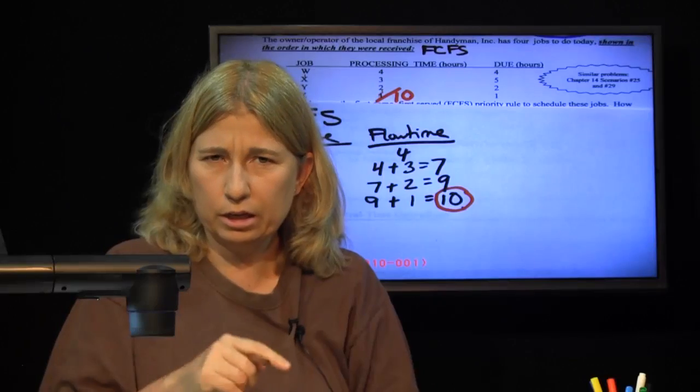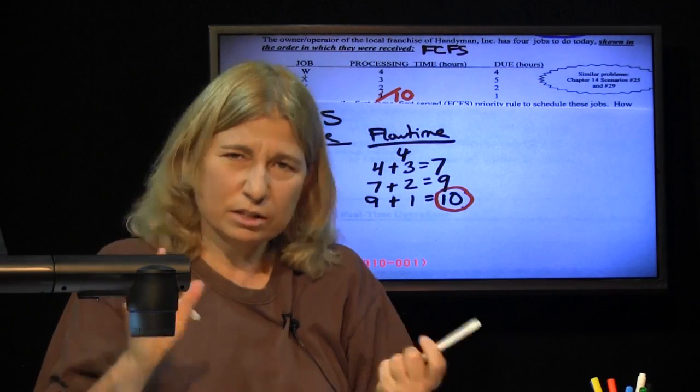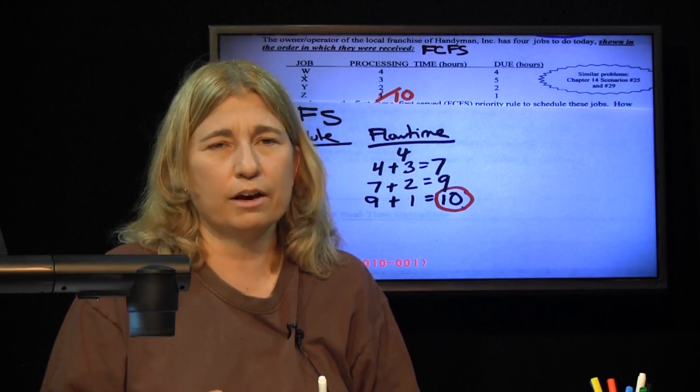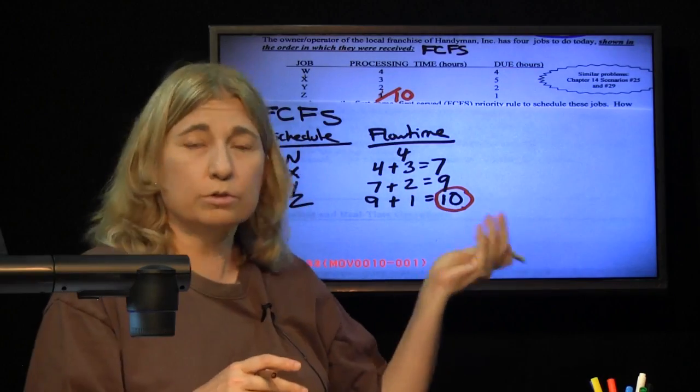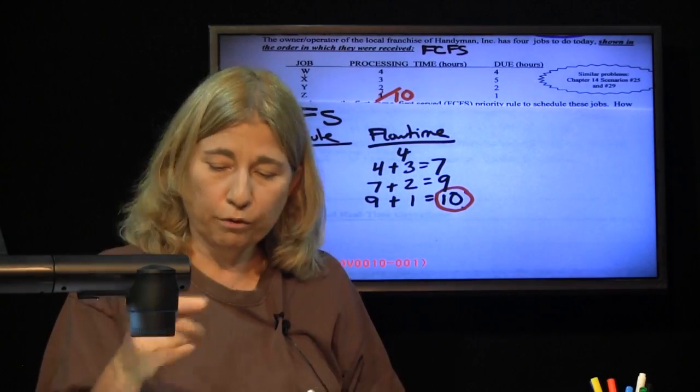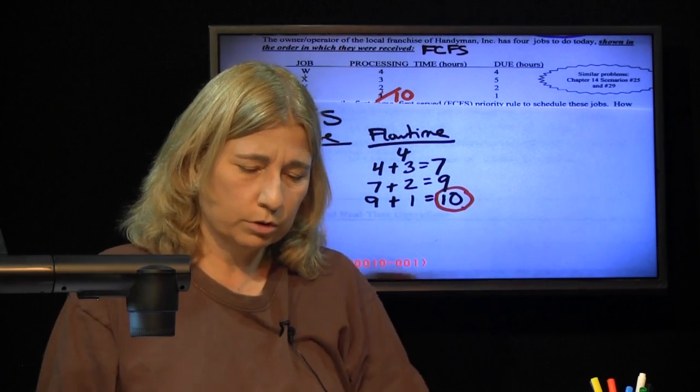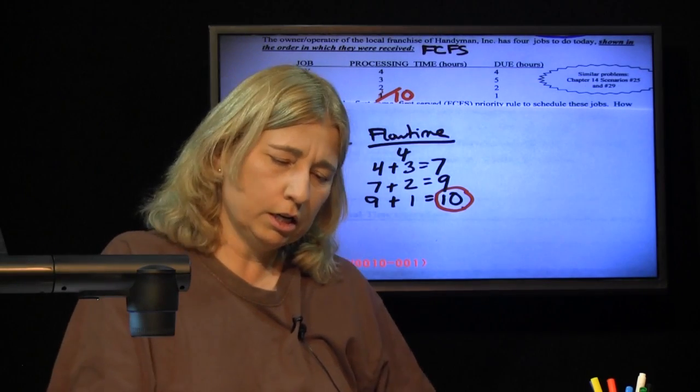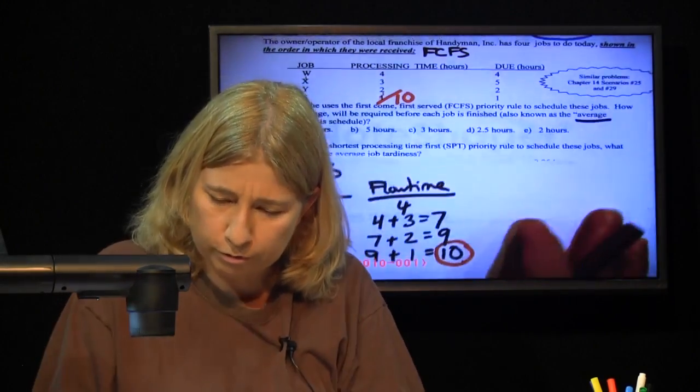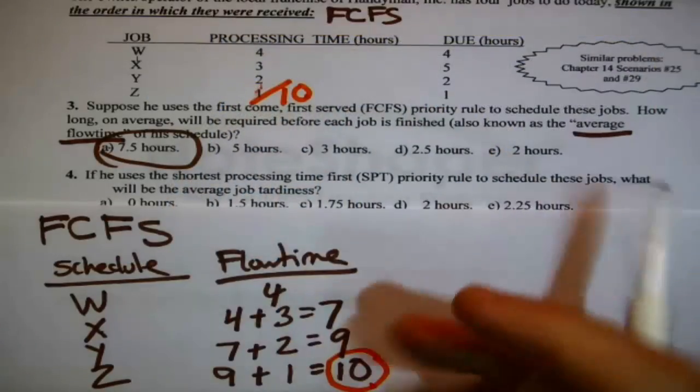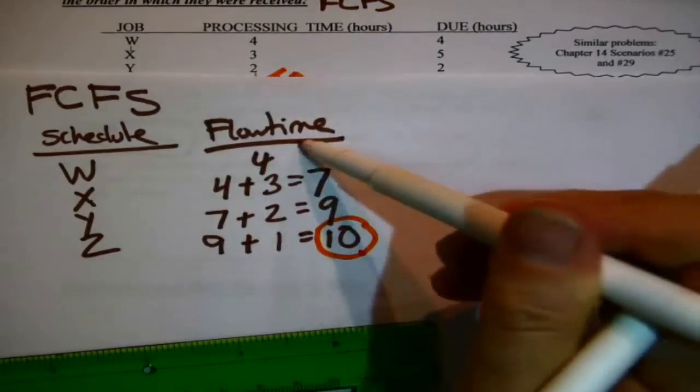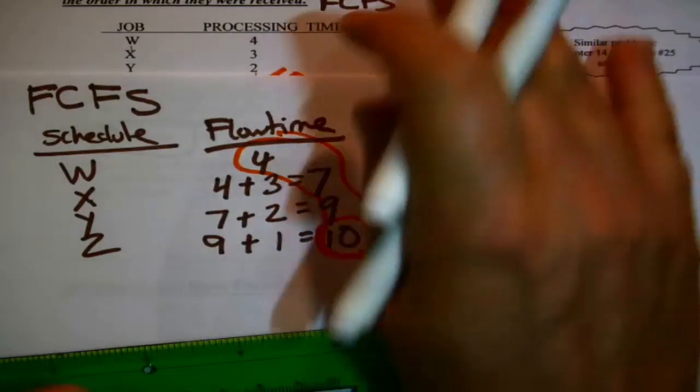Nice check on my math is to just add up the duration data and check that the duration data adds up to the flow time of the last job in the sequence. If it doesn't, then you messed up something in the calculations. Ten's not the answer because it asks for the average flow time, which just means all we need to do is average these numbers. Average four, seven, nine, and ten. When you average those numbers, I get 7.5. Oh yeah, there it is right there, 7.5 hours. The average of these four numbers right here.